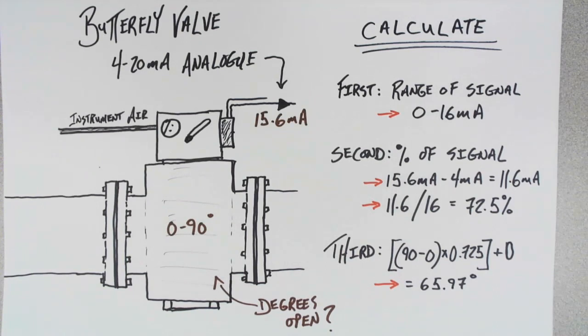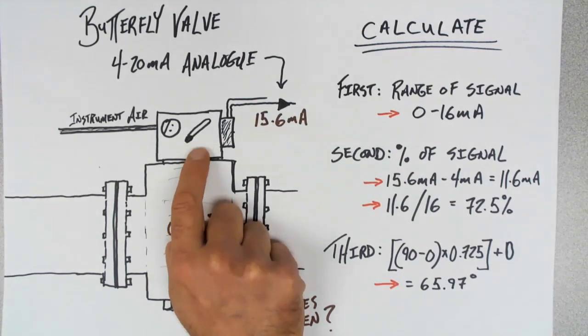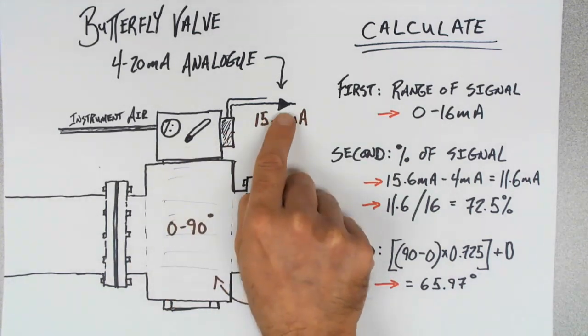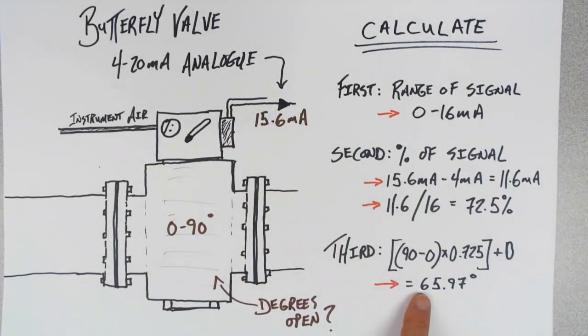If we found that the valve angle was far more or far less, we would then conclude that there must be something wrong with the assembly, because this should result in that amount of physical movement.